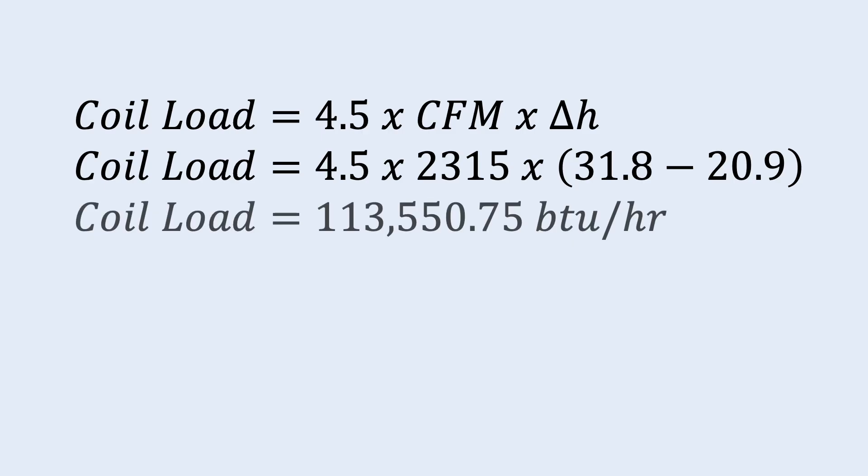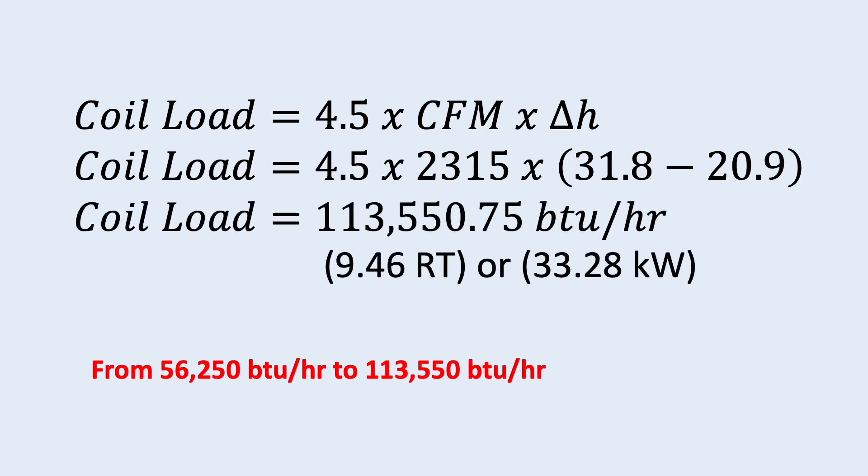So, putting in the airflow, the on-coil and off-coil enthalpy into the equation, the air handling unit cooling coil capacity is 113,000 BTU or about 9.5 tons. From about 56,000 BTU to 113,000 BTU, using the cooling load as the AHU capacity will result in an under-capacity system.